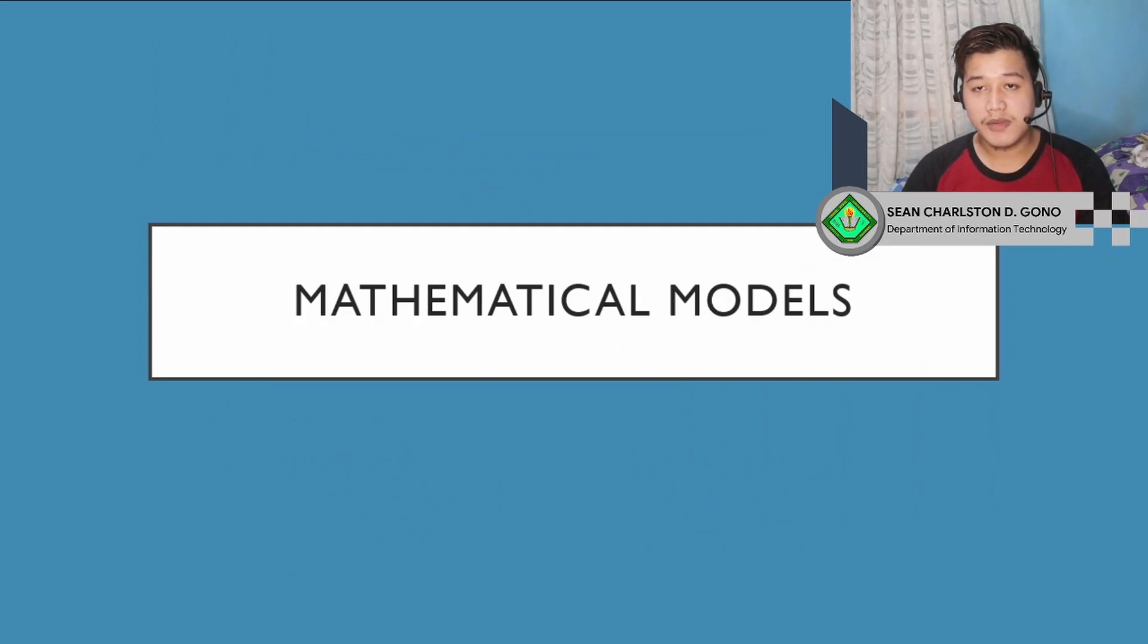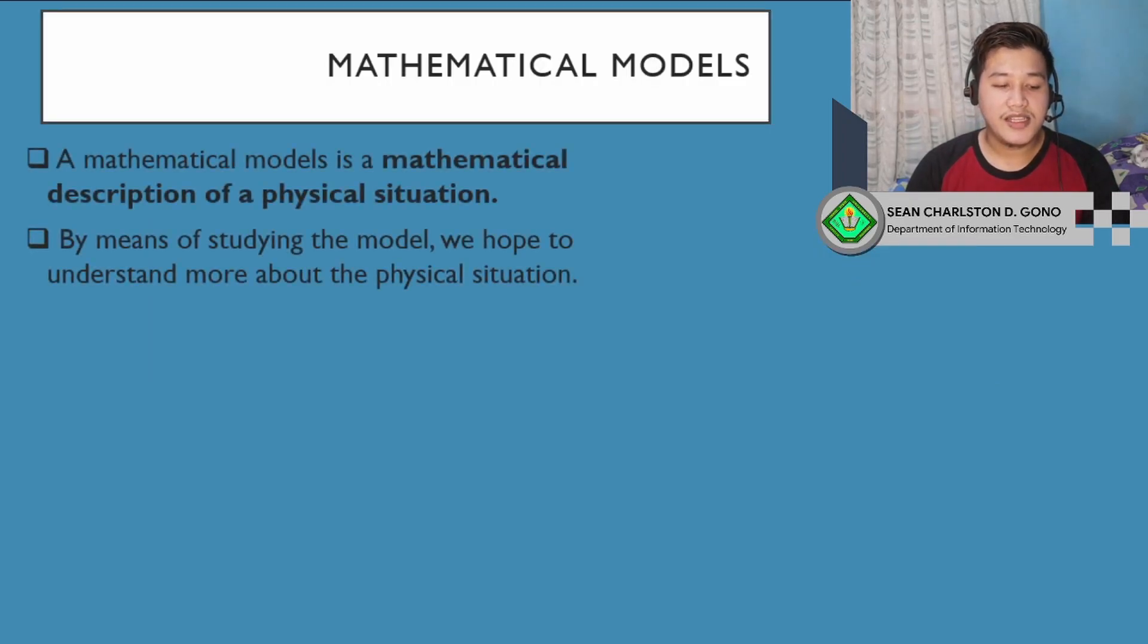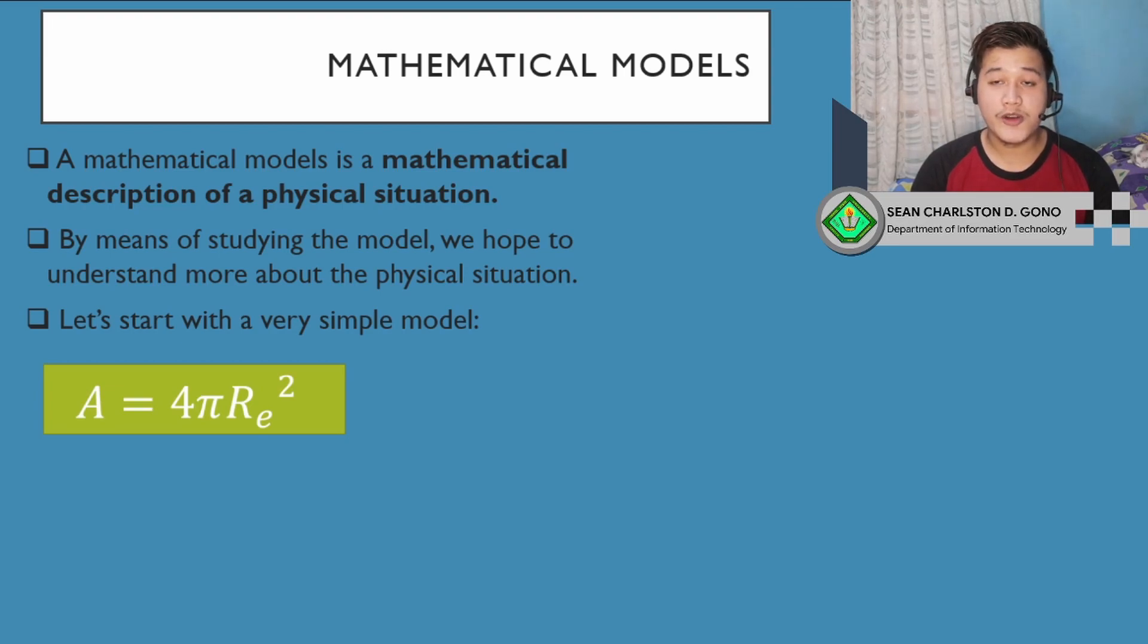To gain more understanding of the numerical analysis part of mathematical models, let's look at mathematical models we can use as examples. How accurate do these models have to be to represent the real thing? A mathematical model is a mathematical description of a physical situation. We're trying to represent a system, entity, phenomenon, or anything in the world using mathematical description. By studying the model, we hope to understand more about the physical situation. Any mathematical model we use must describe the real thing or the physical situation. Let's start with a very simple model: A = 4πr².